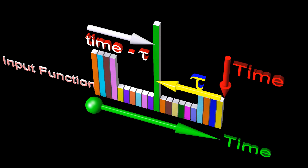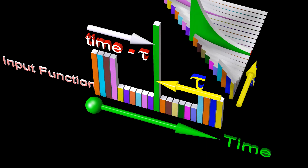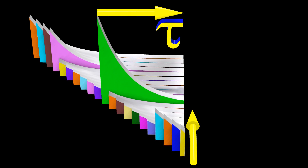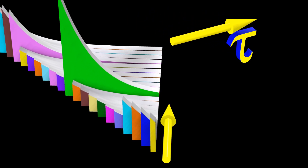Each red rectangle is also associated with the value of the impulse response function at the moment where time equals tau. Since the height of each red rectangle depends on both of these factors, the height of each red rectangle is described by the following equation.